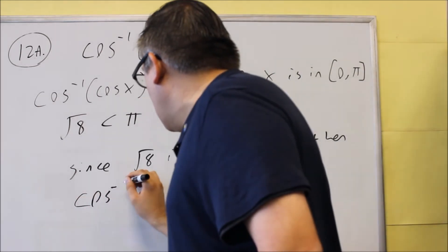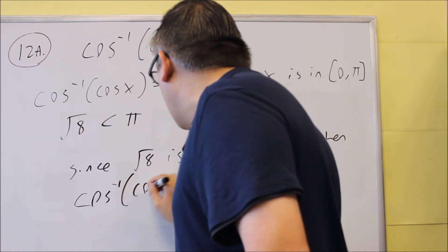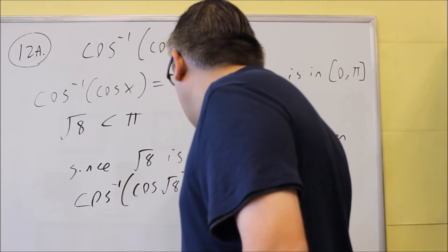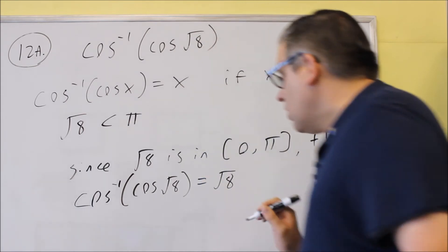then we're going to take inverse cosine of cosine of square root of 8, which should equal square root of 8.